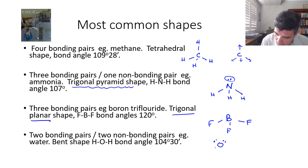When we have just two bonding pairs, oxygen in water still has the tetrahedral arrangement, but only two of those electrons are actually bonding. We call this a bent molecule.